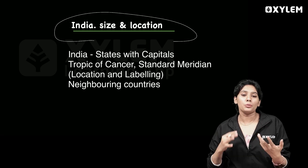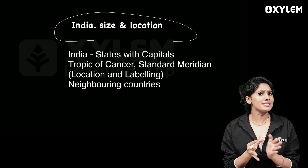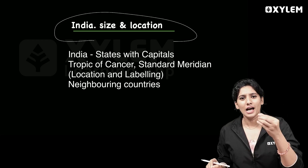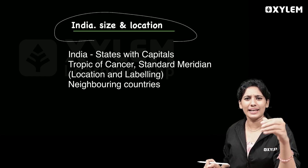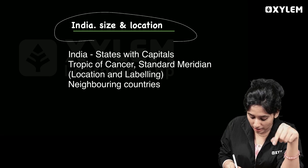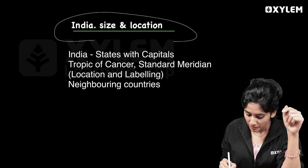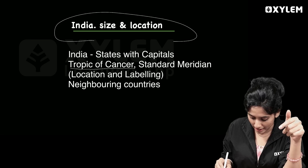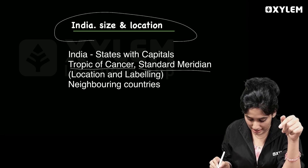For example, Trivandrum. India has all of the states and their capitals. It is a very basic topic. Then, we have the Tropic of Cancer and the Standard Meridian — that is what you want to mark.